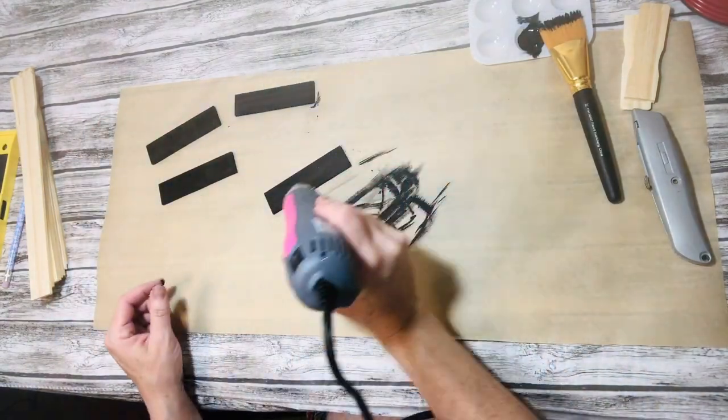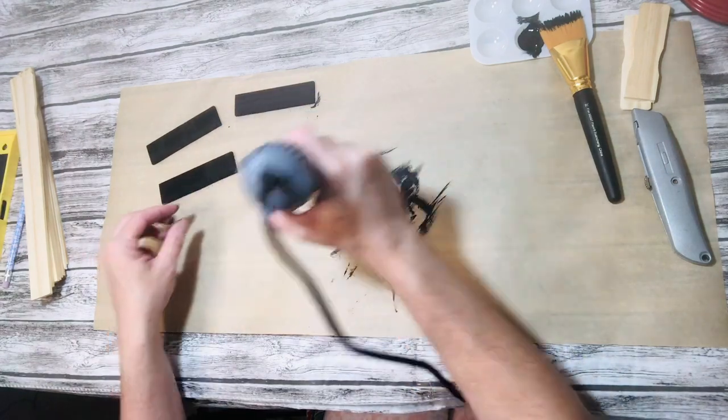Chalk paint dries pretty quickly, but I use a heat gun to speed up the process a little.